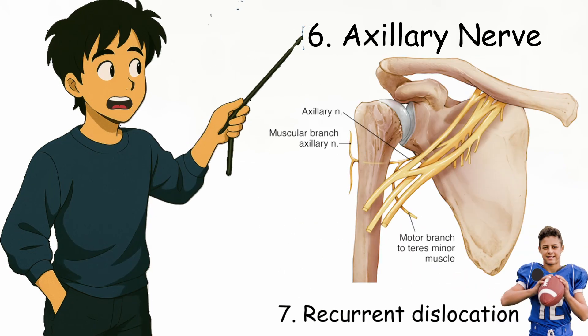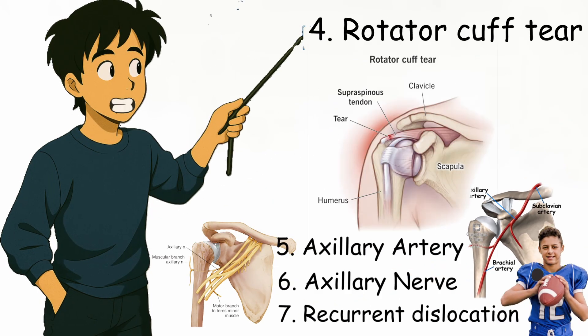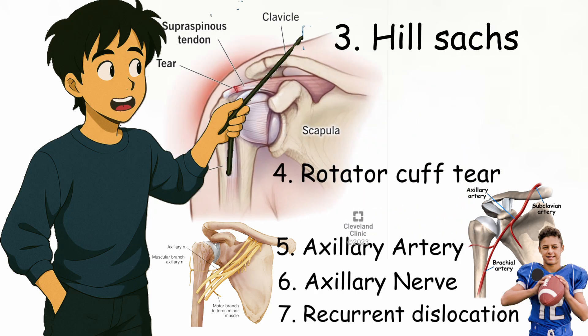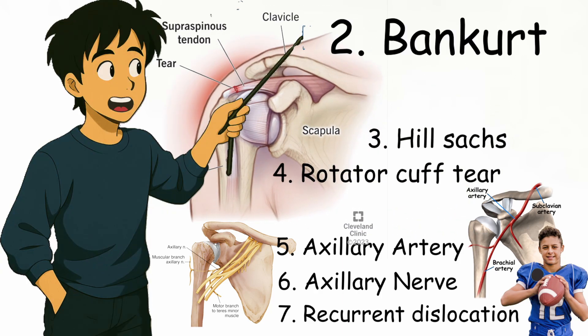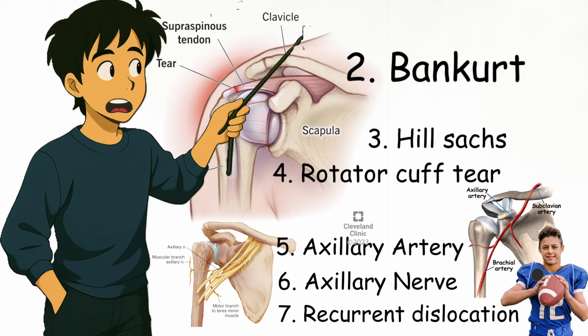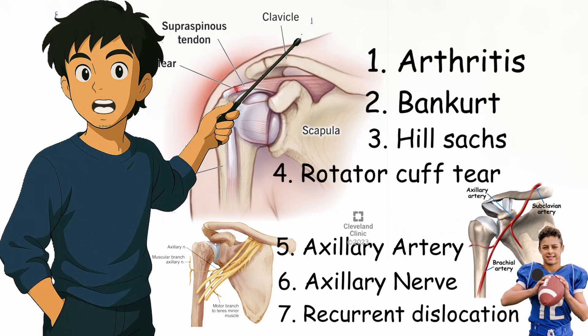Complications of shoulder dislocation include recurrent dislocation (especially in young athletes), axillary nerve injury, axillary artery injury, rotator cuff tear, Hill-Sachs lesions, Bankart lesions, and arthritis.